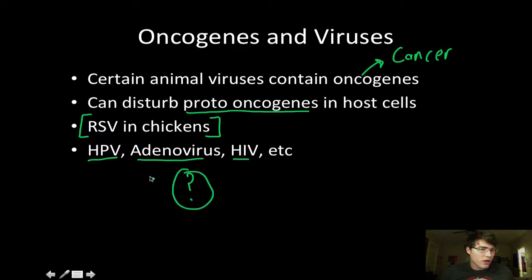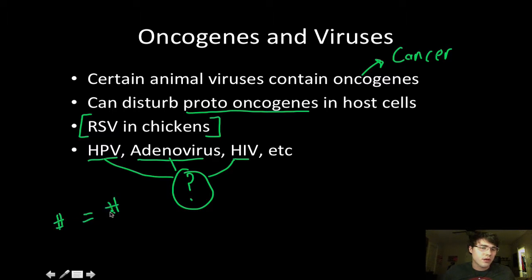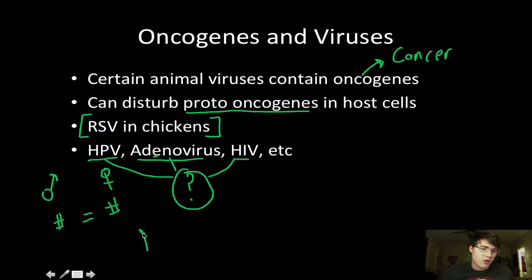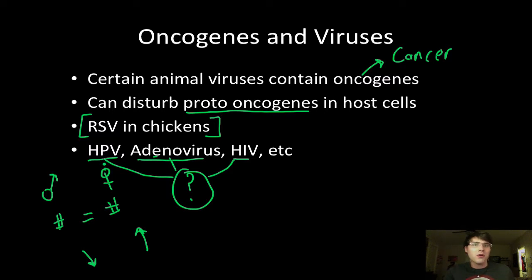However, more studies need to be done before we start making definitive claims. Take HPV: if there's an equal number of men and women with HPV, then why are cervical cancer rates so high and penile cancer rates so low if there's an equal number of people infected? Just a hypothesis — this relates back to Koch's postulates and how microbes play a role in disease; it's more complex than that.